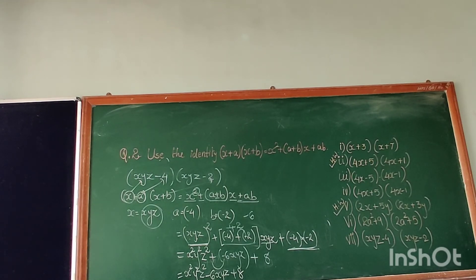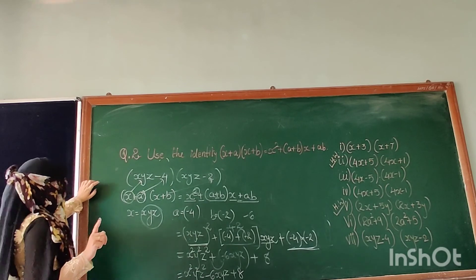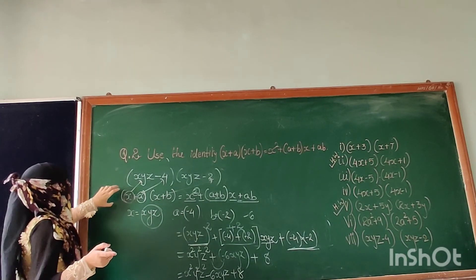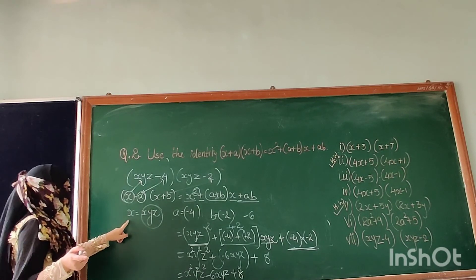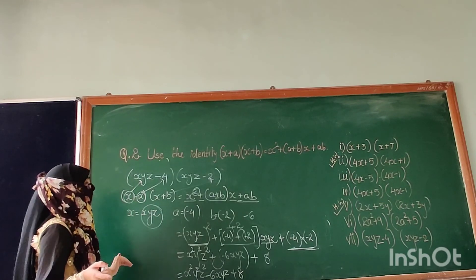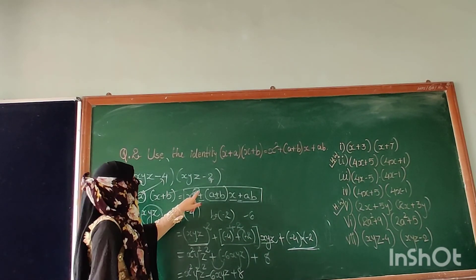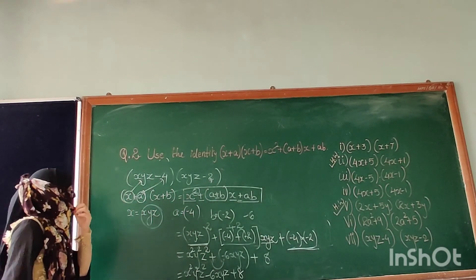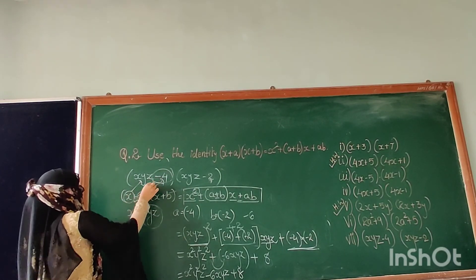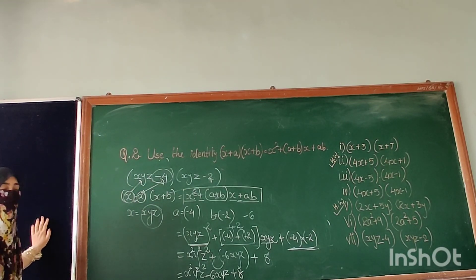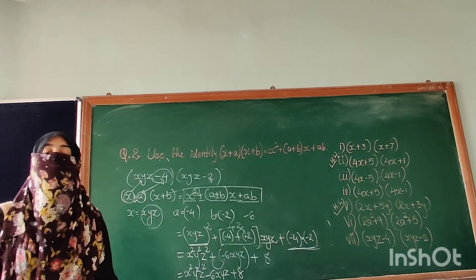So the remaining sums you will try to solve by yourself. Let me summarize the steps for you. What is the first step? You will write down the identity. Then after, you will compare this LHS with our question. So from the question you will get the values of x, a, and b. Put all the values in the identity and you will get the answer. Now in the next video we will come with question 3. Thank you. Have a good week.